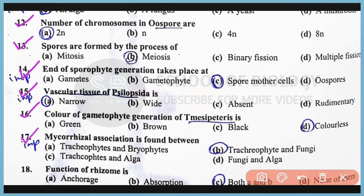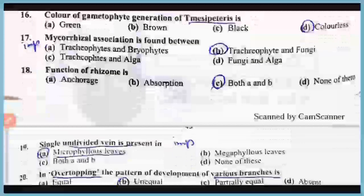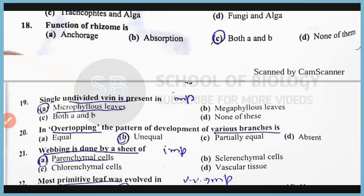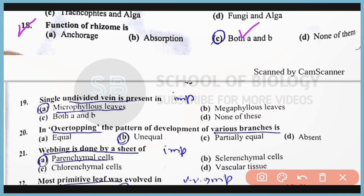Question Number 17: Mycorrhizal association is found between tracheophytes as well as fungi. The correct answer is Option B. Question Number 18: The function of rhizome is to anchor the plant as well as help in absorption. The correct answer is Option C — both A and B. Question Number 19: A single undivided vein is present in microphyllous leaves. The correct answer is Option A.